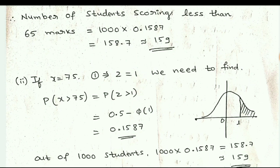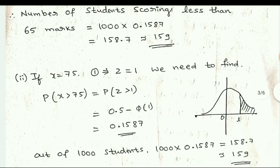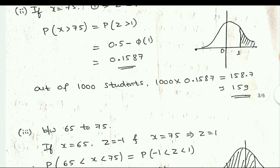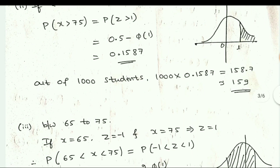Second question: marks more than 75. Substitute x = 75 into equation 1: z = 1. So P(x > 75) = P(z > 1). The area to the right of 1 is 0.5 − φ(1) = 0.5 − 0.3413 = 0.1587. Multiplying by 1000 gives 158.7, which rounds to 159 students scoring more than 75.